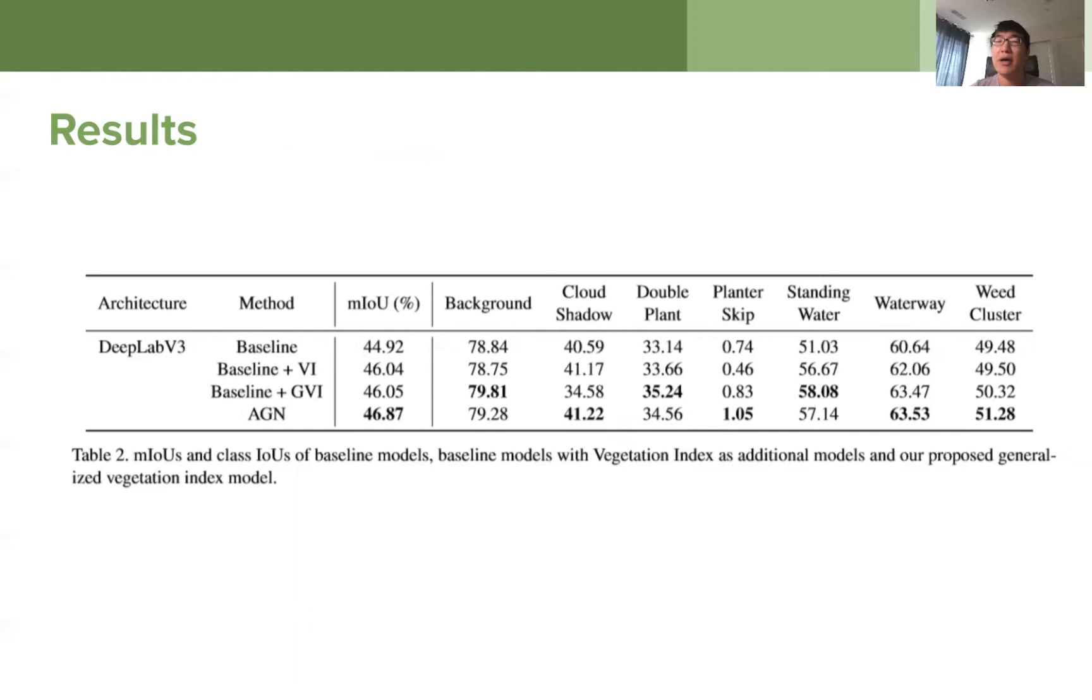Okay. So this is our, by plugging the generalized vegetation index and our adaptive group normalizations, we do see the consistent improvements from our baseline models. So as you can see, if we plug in the vegetation index, there's some improvements over double plant and standing water and waterway and the weed clusters. If we use our generalized vegetation index, which you don't need to specify the form of the formulation of vegetation, definition of vegetation index, it achieves better results. And especially it improves a lot on the double plant. And if we further use our adaptive group normalization, we can see that actually is the best of the results of all the four experiments. And it improves a lot over the planter skip and weed clusters.